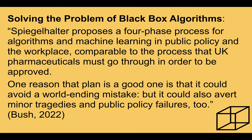There are some ways to help solve the problem of black box algorithms. Spiegelhalter proposes a four-phase process for algorithms and machine learning in public policy and the workplace, comparable to the process that UK pharmaceuticals must go through in order to be approved. This plan could avoid major mistakes but also avert minor tragedies and public policy or labor decision failures.